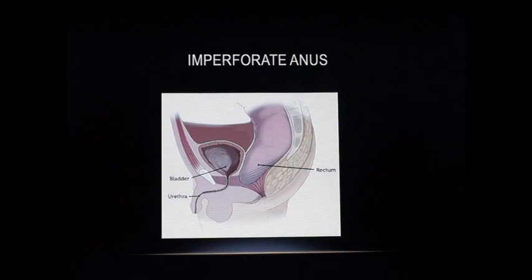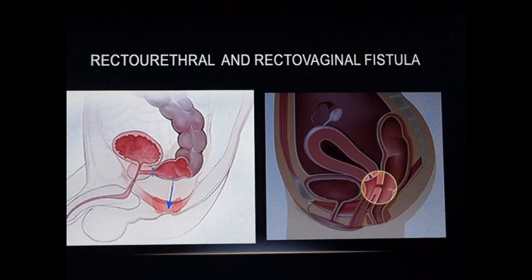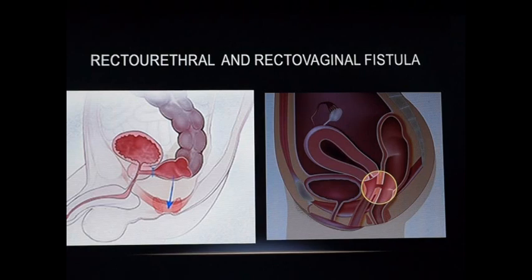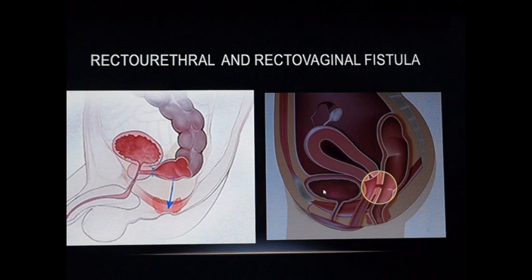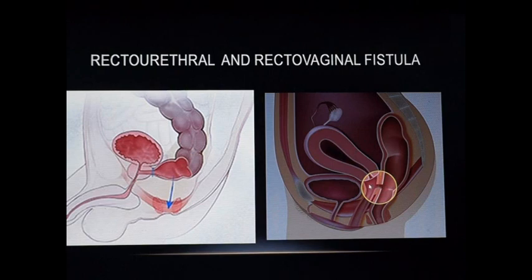Imperforate anus may also occur due to secondary reasons such as rectourethral or rectovaginal fistula. In males, the urinary bladder and urethra are related in front of the rectum. Most commonly, a fistula occurs through the prostatic part of the urethra, communicating with the developing rectum, causing an imperforate anal canal. In females, between the urinary bladder and the rectum, the paramesonephric (Müllerian) ducts grow to form the uterus and vaginal canal. Because of the intervening vagina between the rectum and the urinary bladder, a rectovaginal fistula may result. This is another anomaly associated with imperforate anus.